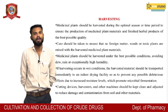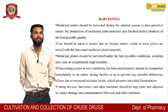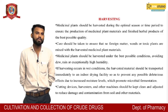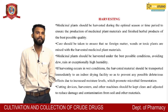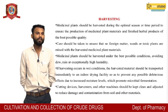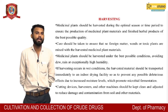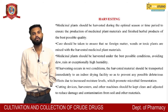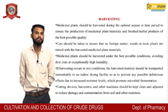Harvesting: Medicinal plants should be harvested during the optimal season or time period to ensure the production of medicinal plant material and finished herbal products of the best possible quality. Care should be taken to ensure that no foreign matter or toxic plants are mixed with the harvested material. Medicinal plants should be harvested under the best possible conditions, avoiding dew, rain, or excessively high humidity. If harvesting occurs in wet conditions, the harvested material should be transported immediately to an indoor drying facility to prevent any deleterious effect due to increased moisture level, which promotes microbial fermentation.